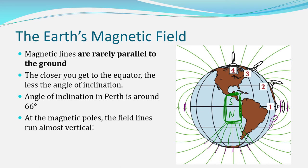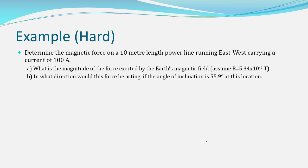For Perth, the angle of inclination is around 66 degrees. This problem involves a current running east to west at 100 amps through power lines with a length of 10 metres. Assuming a magnetic field strength of 5.34 × 10⁻⁵ tesla and an inclination angle of 55.9 degrees, what is the force exerted by the Earth's magnetic field on the wire, and in which direction does that force act?